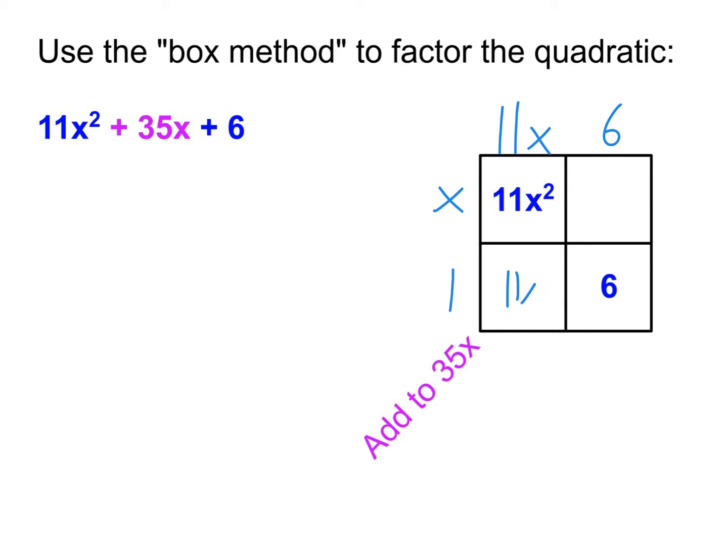I'm going to see what that would give me. So 11x times 1 would give me 11x, and x times 6 would give me 6x. If I add those two together, I get 17x. Not what I wanted. So the next thing I want to do is I'm actually going to switch where the 6 and the 1 are. Because by switching where the 6 and the 1 are, I'm going to change which of those numbers gets multiplied by the 11. So x times 1 is just x. 11x times 6 is 66x. If I add those, I get 67x. Still not useful.